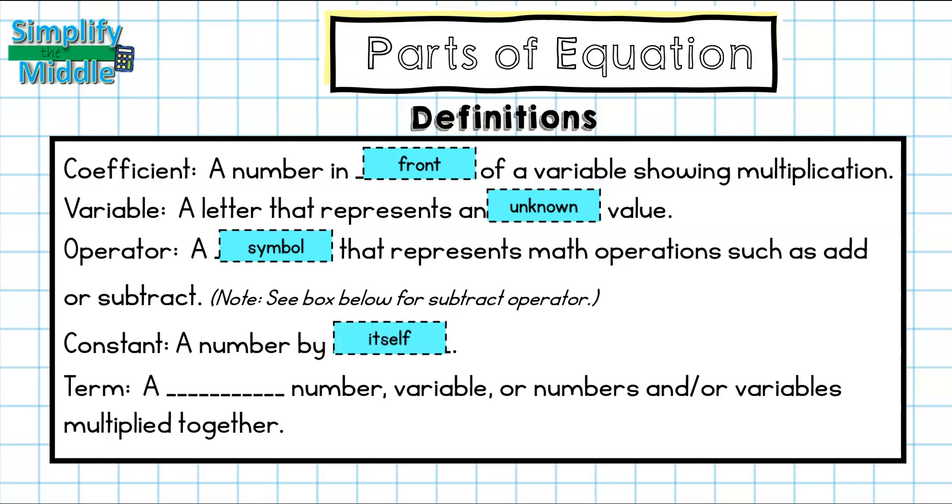A constant is just a number by itself. And a term is a single number, variable, or numbers and/or variables that are multiplied together.